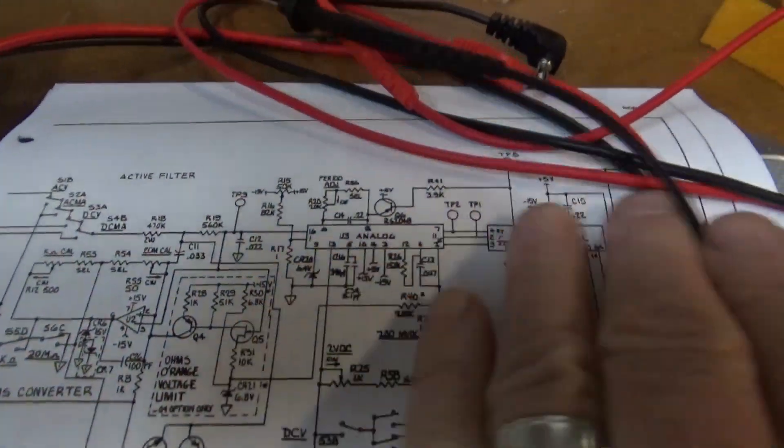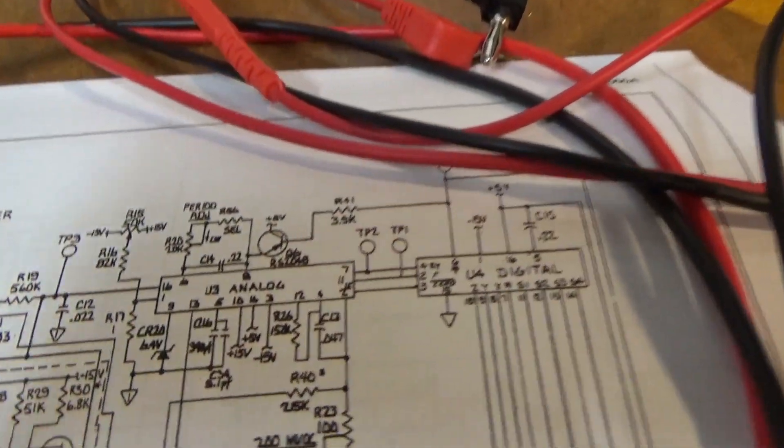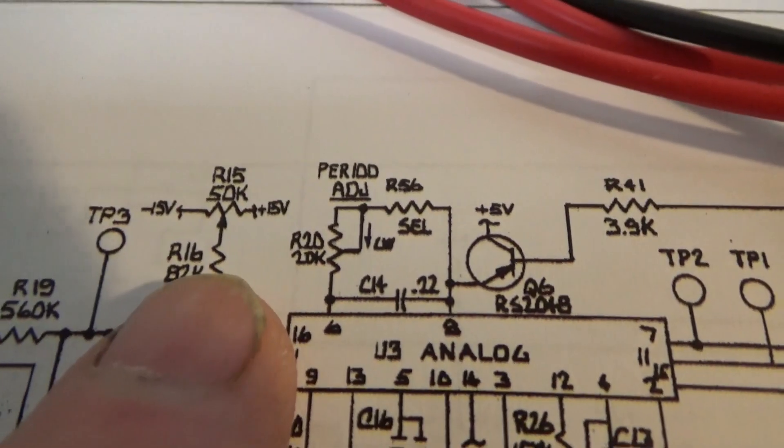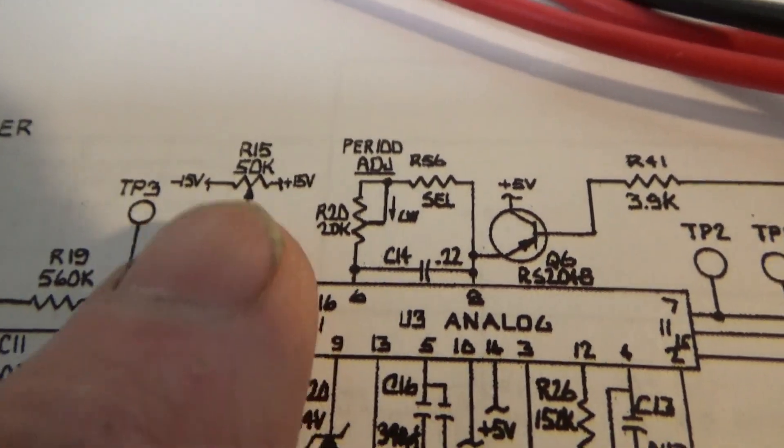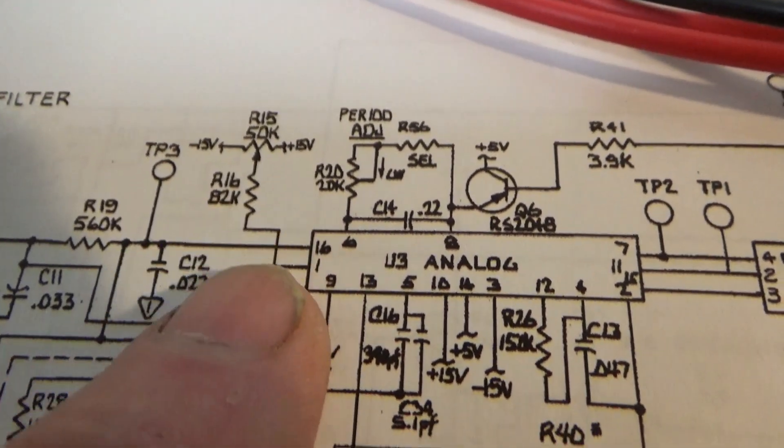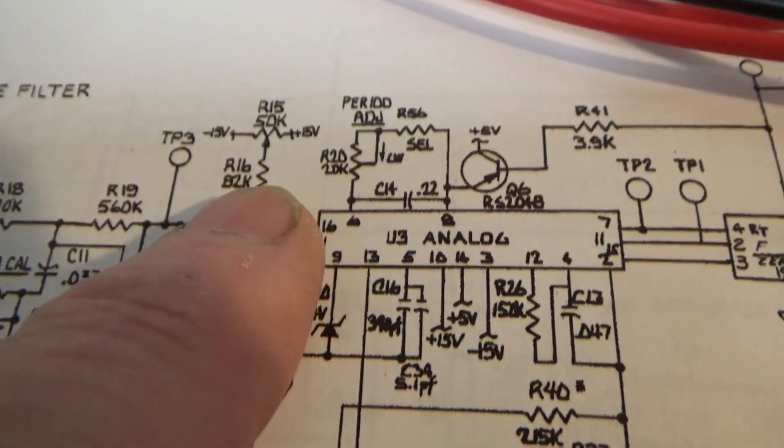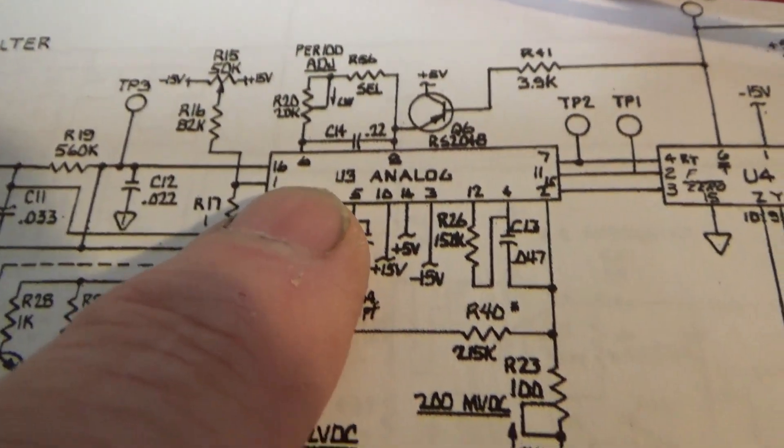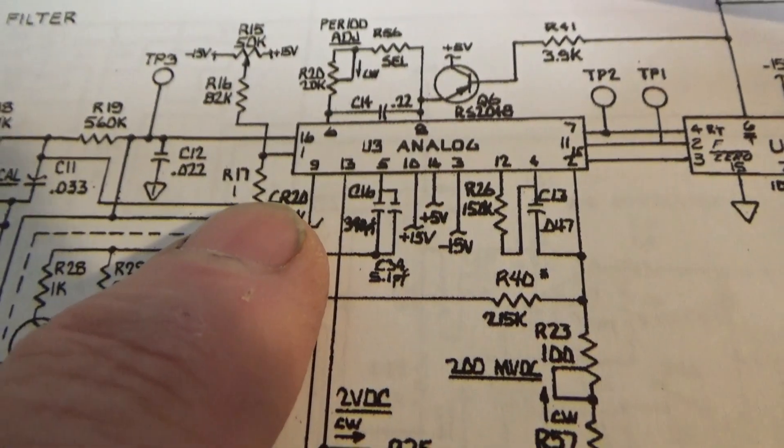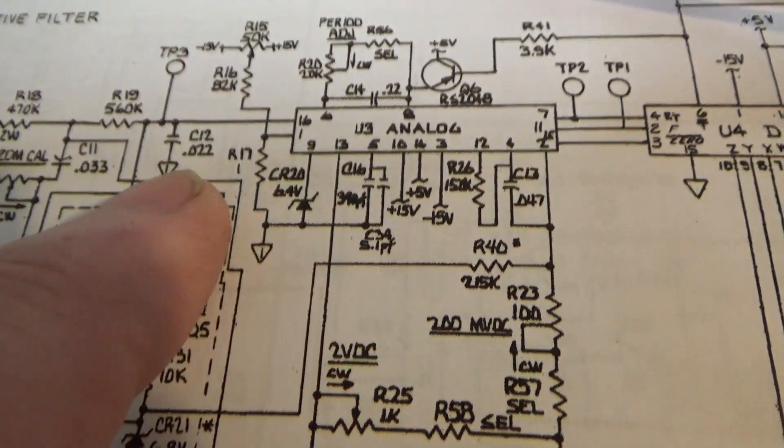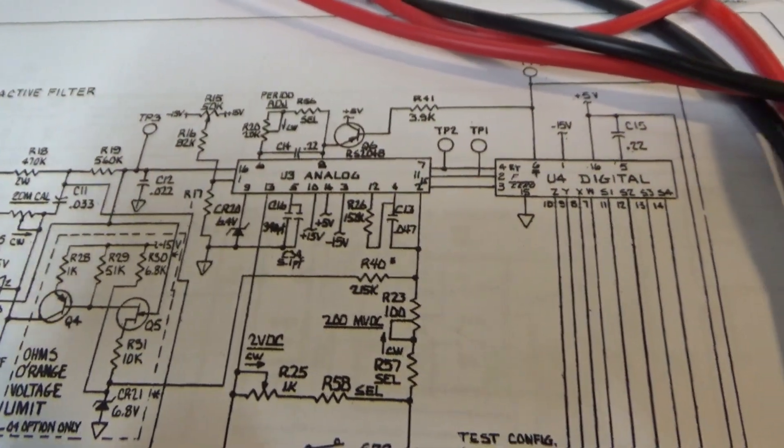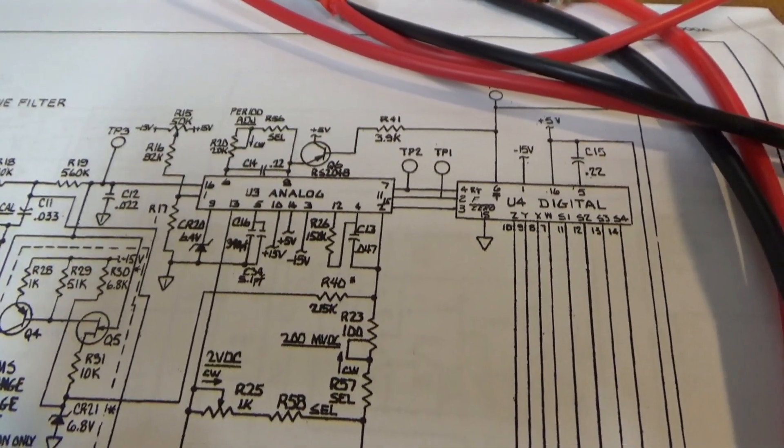And that's right here. There's that pot right there. And it's between plus and minus 15, which those two voltages are there on that pot. So I will go ahead and, it's just going to go through that resistor, connects to pin one of the analog chip U3, and then through a one-ohm resistor to ground. So I'll go ahead and pull those resistors and see if they're all okay and go from there.